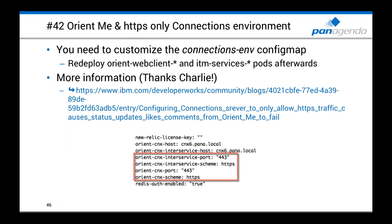Tip 42: OrientMe with HTTPS-only environments. If you have an HTTPS-only environment (which should be the default for new installations), ensure your config map includes the inter-service port 443 and inter-service scheme HTTPS, and the OrientMe CNX port and scheme must also be set correctly. After updating the config map, redeploy all OrientMe web client pods and OrientMe bar service pods. Thanks to Charlie Price from IBM Support for blogging about this.